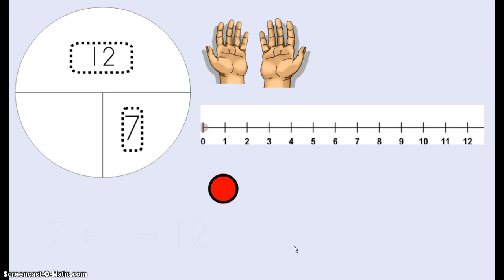The last time we did something like this we used a part part whole mat and you needed to find the missing part. 7 plus something equals 12. 7 is one of our parts, 12 is our whole. We need to find the missing part.